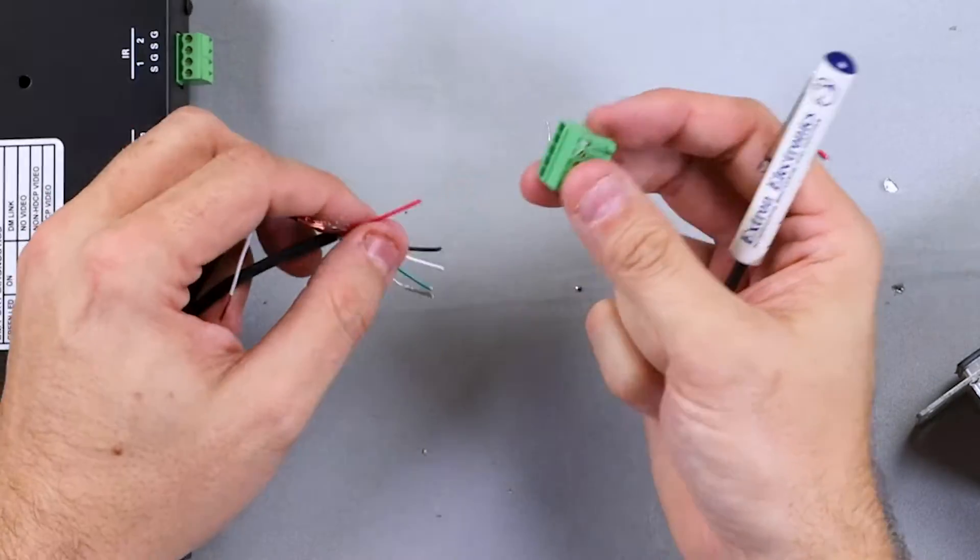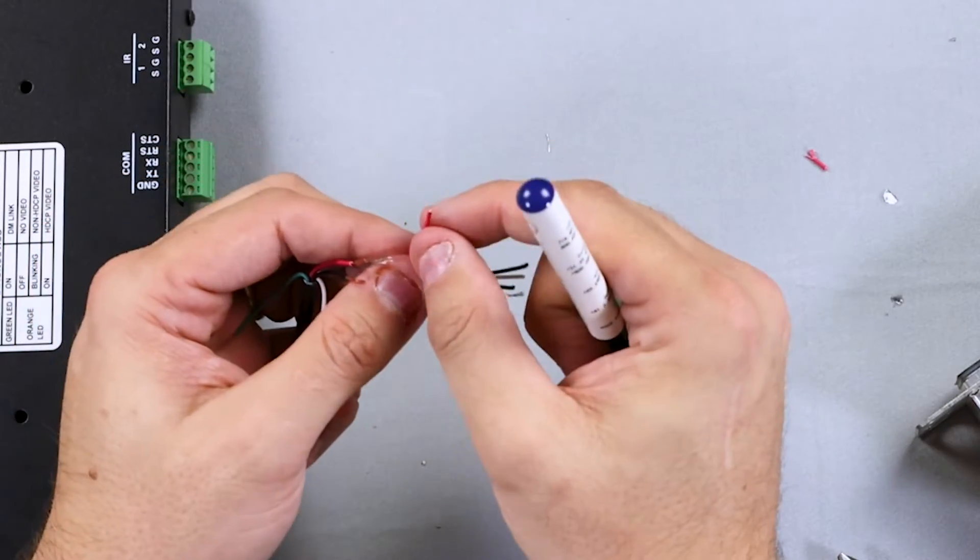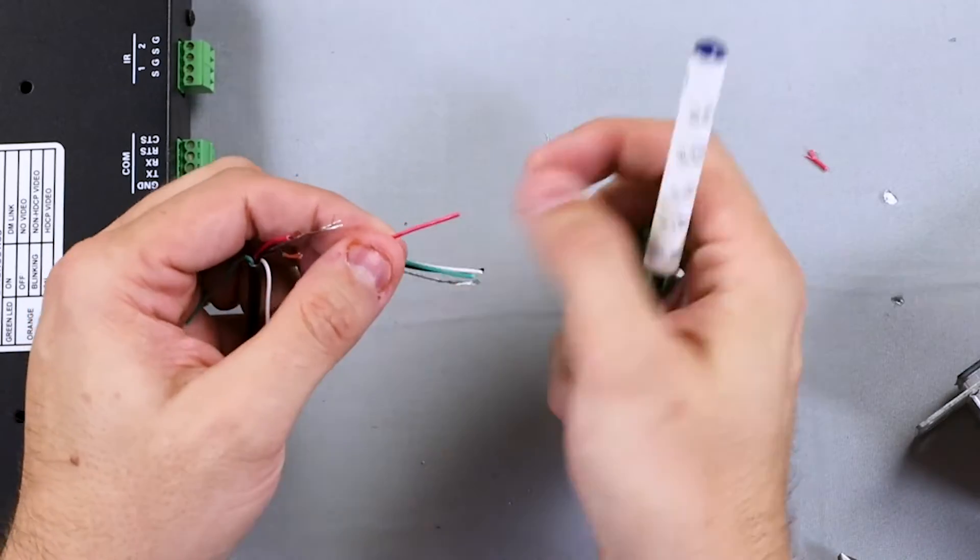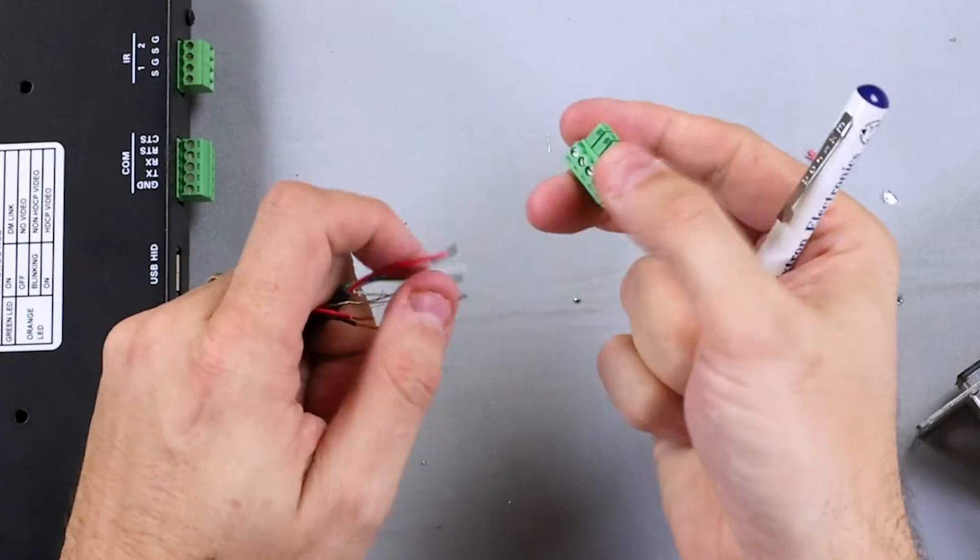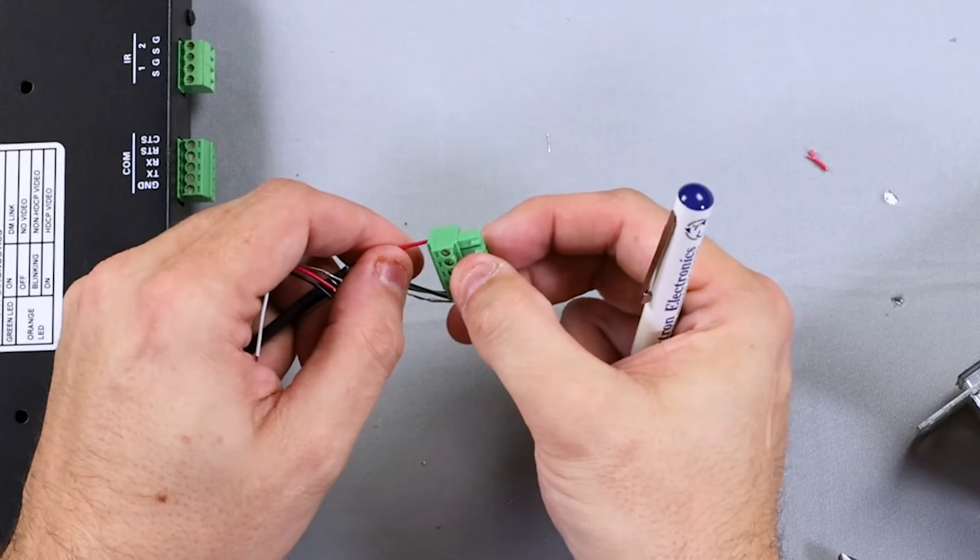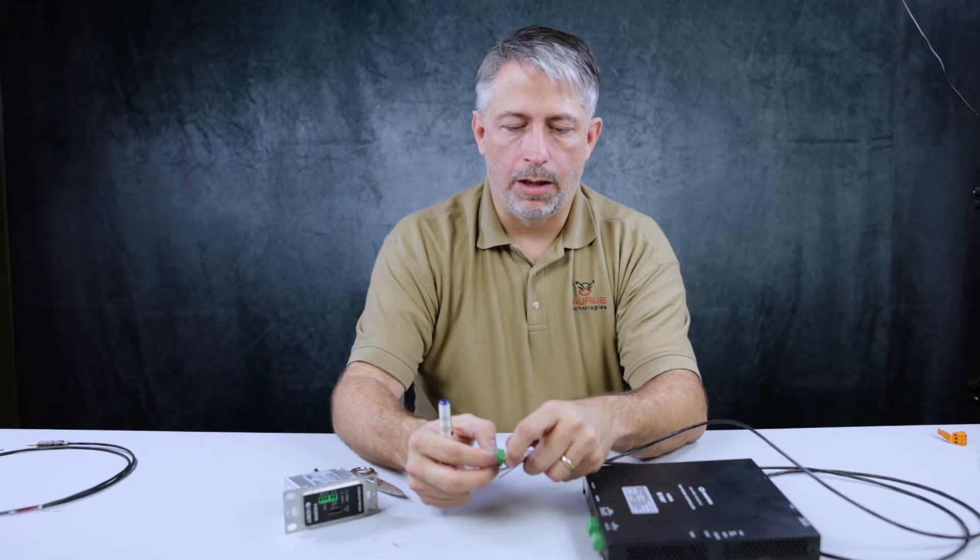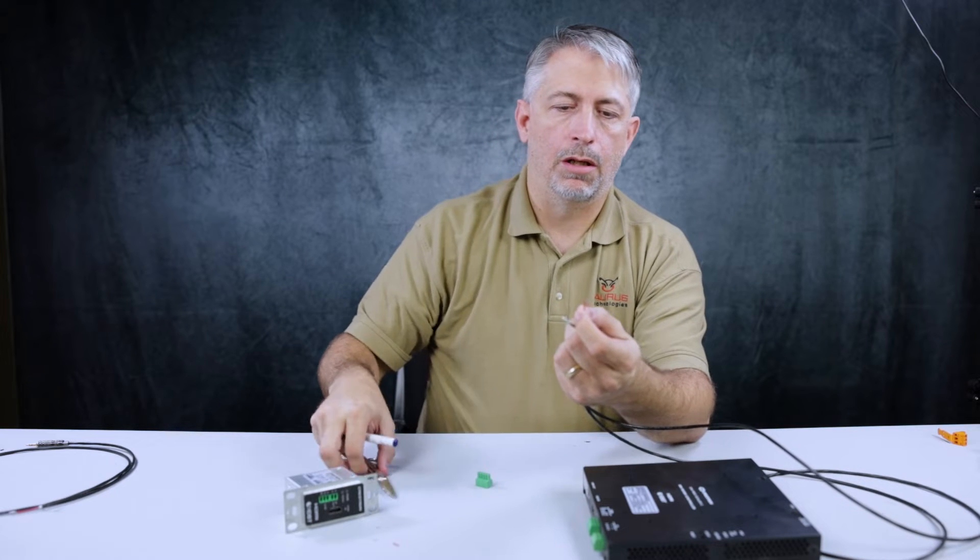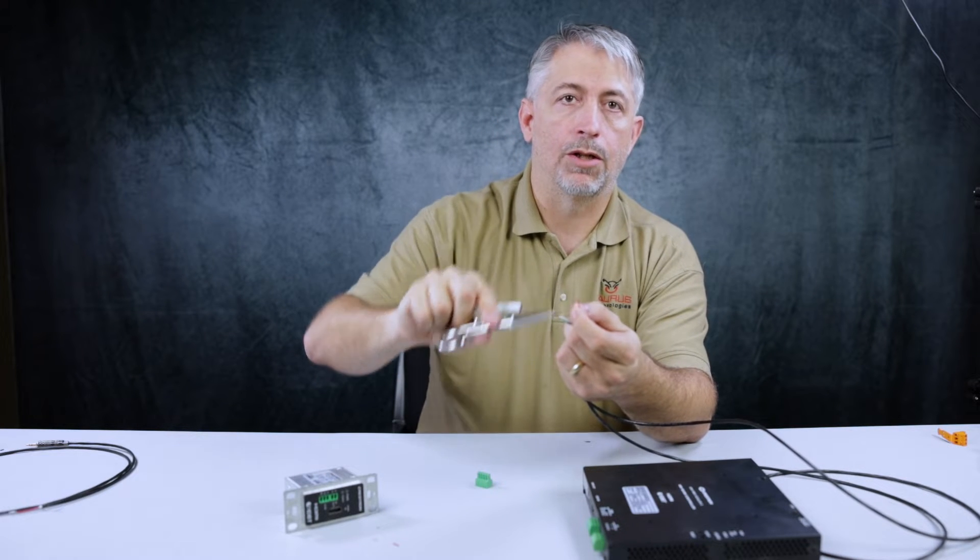When doing a Phoenix connection, in order to know how much jacket to remove off the cable, use your Phoenix as its own guide. You can place the cable in, butt it up against the inside and give the cable a little pinch, and then you can know how much jacket to remove.